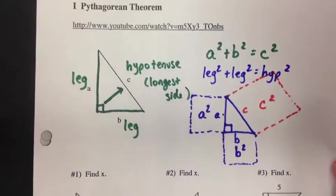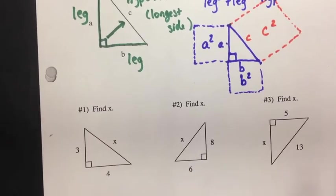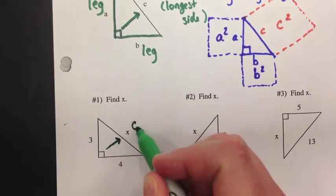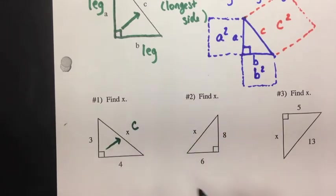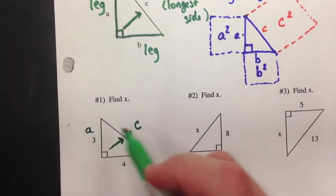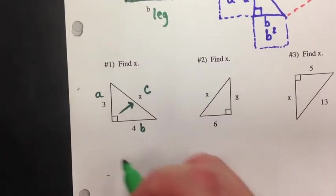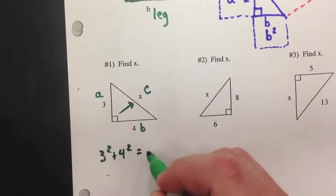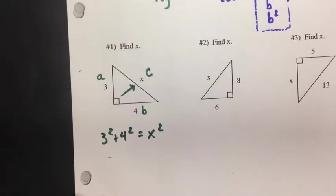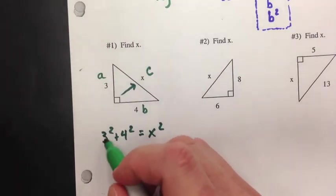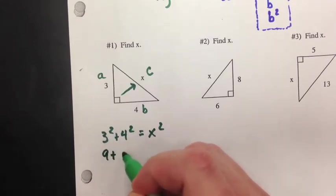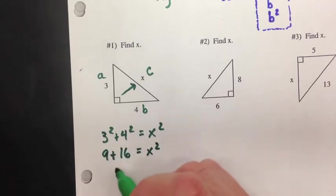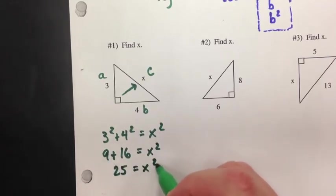Okay, so let's do some examples that are more algebraic. Example number one, we want to find X. Now, first of all, I need to identify the hypotenuse is my X in this case. So, my A and B are 3 and 4. So, when I set this up, I can say 3 squared plus 4 squared equals X squared. So, there's my equation. Now, I'm going to simplify. 3 squared is 3 times 3. So, that's 9. 4 squared is 16. And now, we add those. 9 plus 16 is 25 equals X squared.